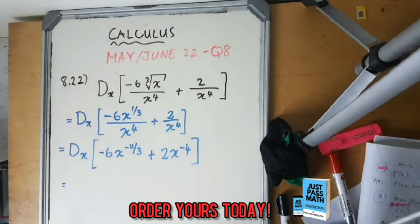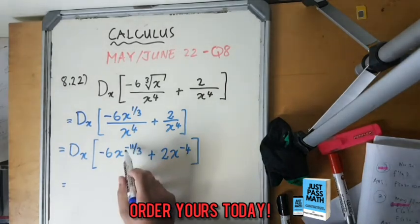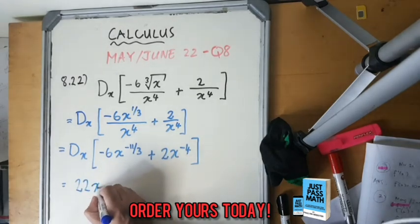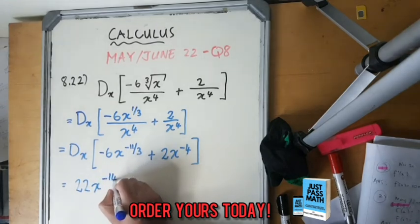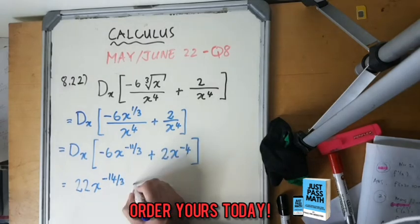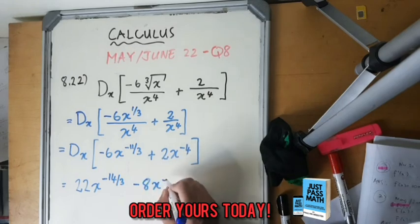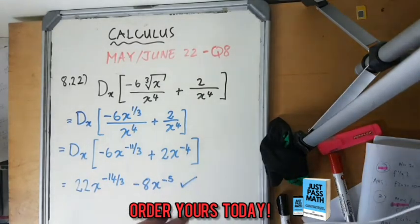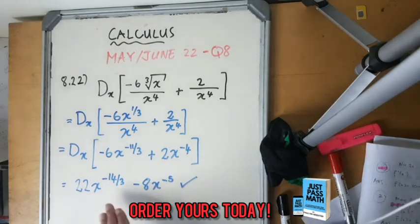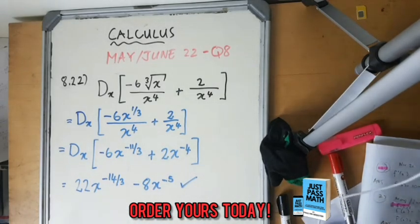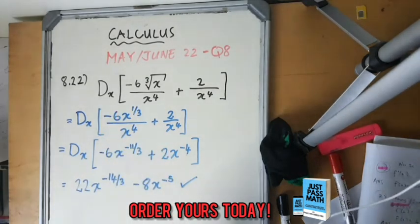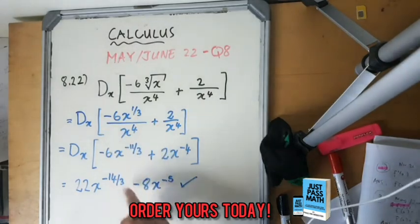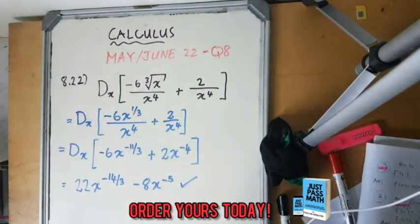Now it's much easier to derive. Taking the derivative: for the first term, multiply -11/3 by -6 to get positive 22, keep x, subtract 1 giving exponent -14/3. For the second term, multiply -4 by 2 giving -8, subtract 1 giving exponent -5. The final answer is 22x^(-14/3) - 8x^(-5).